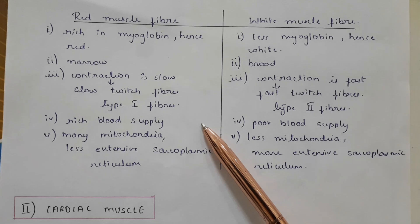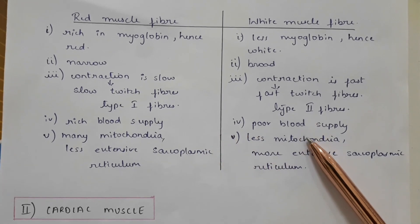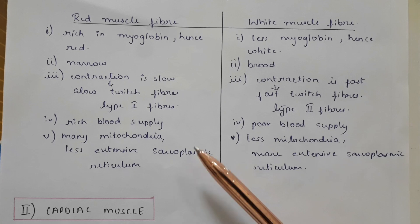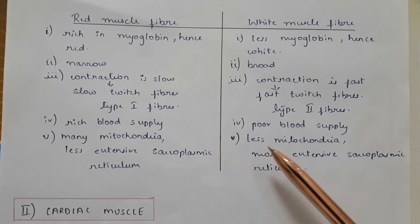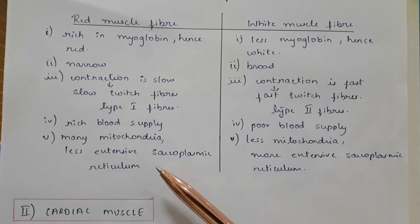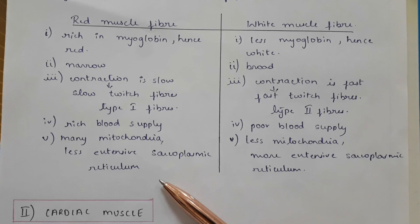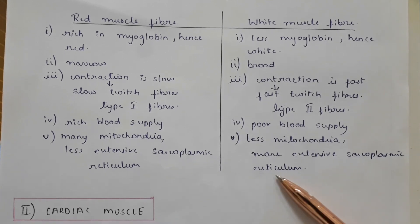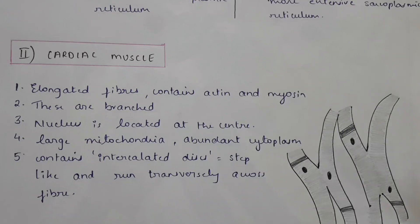Red muscle fibers have rich blood supply; white muscle fibers have poor blood supply. Red muscle fibers have many mitochondria, whereas white muscle fibers have fewer mitochondria. Red muscle fibers have less extensive sarcoplasmic reticulum, whereas white muscle fibers have more extensive sarcoplasmic reticulum. Then we have the cardiac muscle.